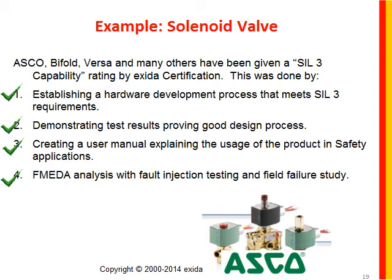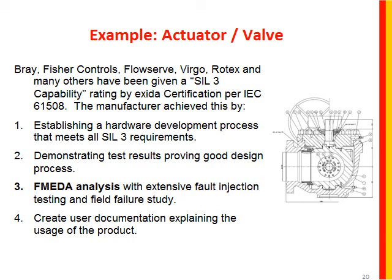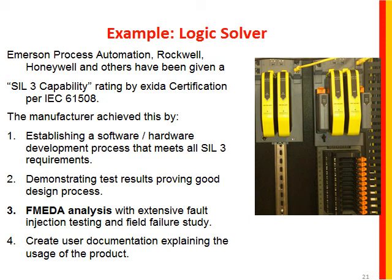We cover both random and systematic failures because those are the two fundamental principles of IEC 61508. Actuators and valves have been certified — a lot of people ask whether mechanical parts are part of 61508, but yes, they are; they're part of a safety system, and there is a clear statement that this includes all parts of a safety instrument and function that has electrical, electronic, or programmable electronic components. We look at the design process, testing results, and perform a detailed FMEDA analysis that provides reliable, accurate failure rate data — along with user documentation — to cover both systematic and random failures.